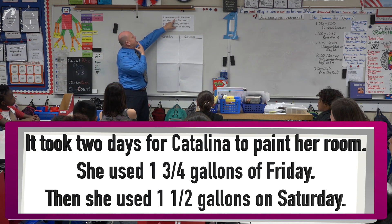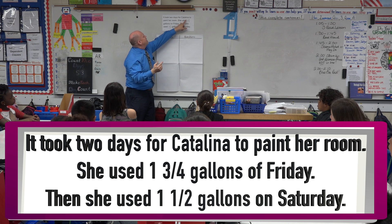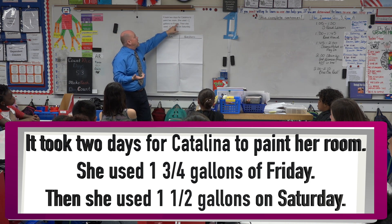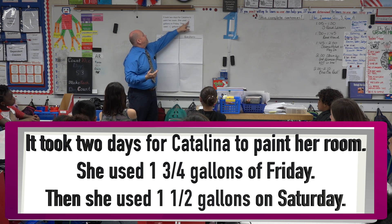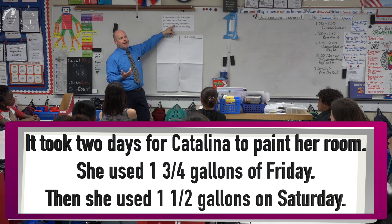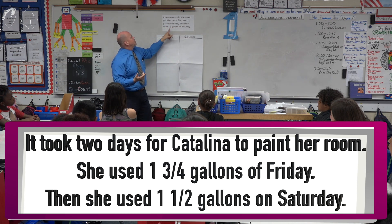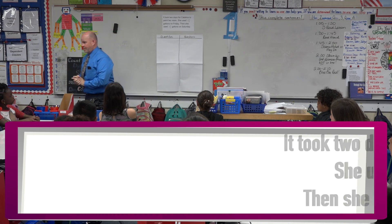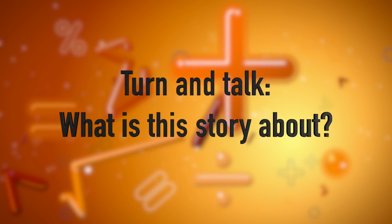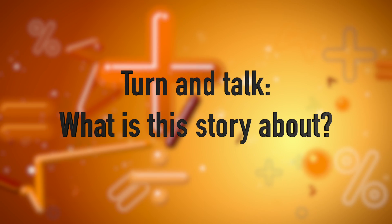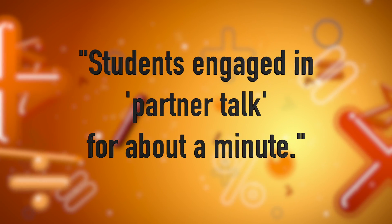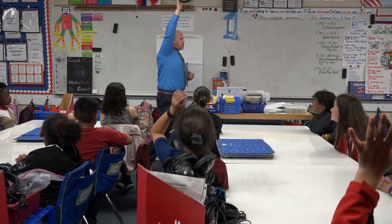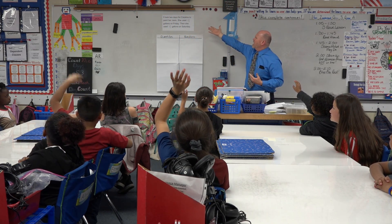It took two days for Catalina to paint her room. She used one and three-fourths gallons on Friday. Then she used one and a half gallons on Saturday. With your partner, I want the two of you to talk about what is this story about? Talk with your partners. Raise your hand — tell me, what is the problem about?